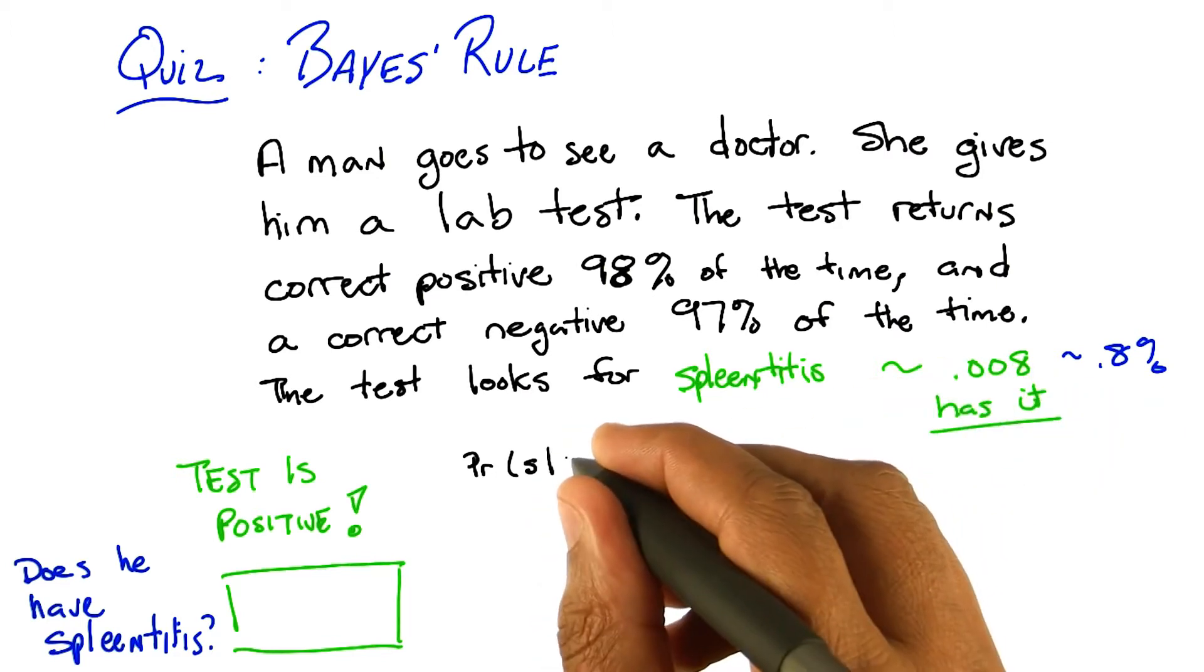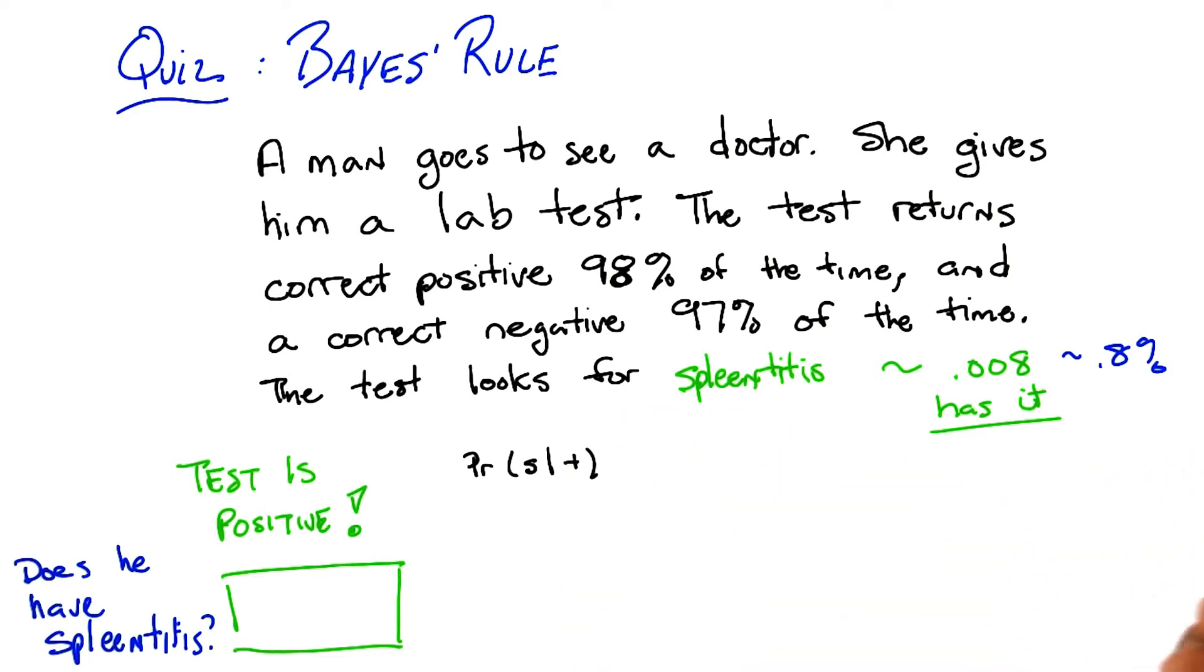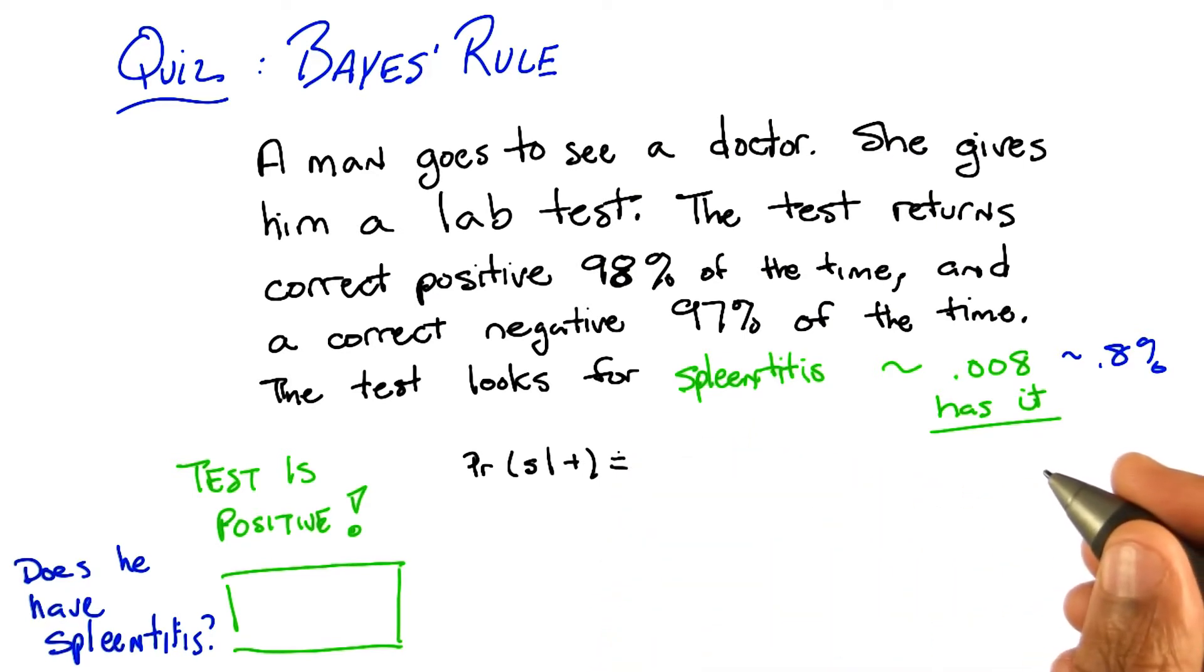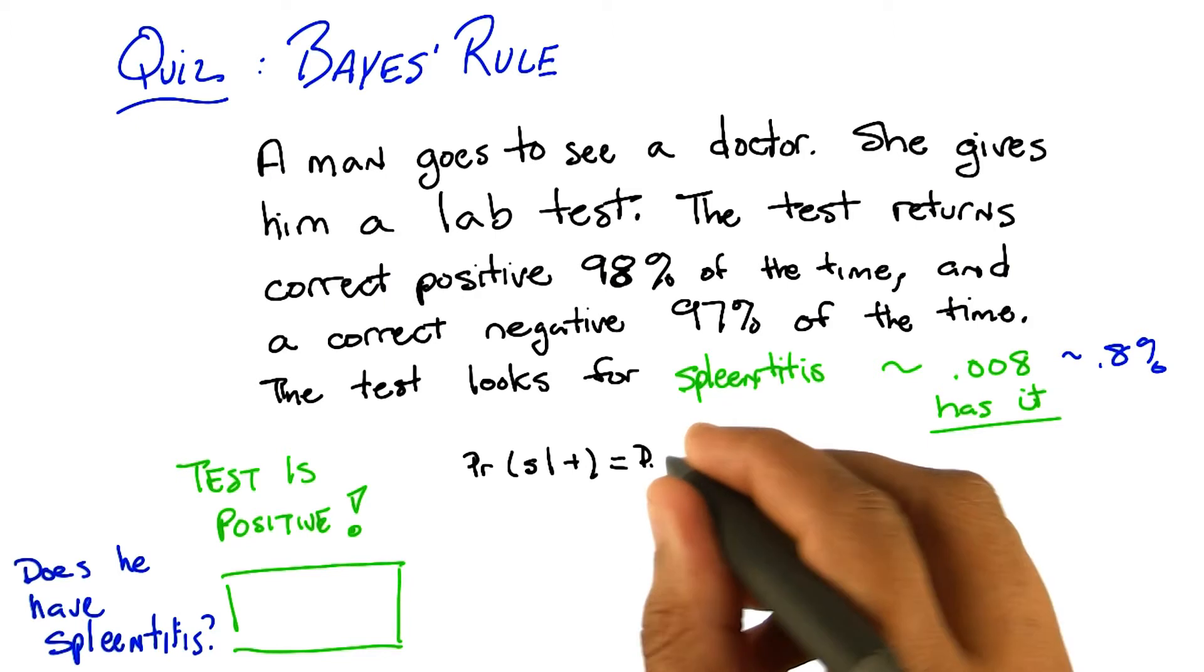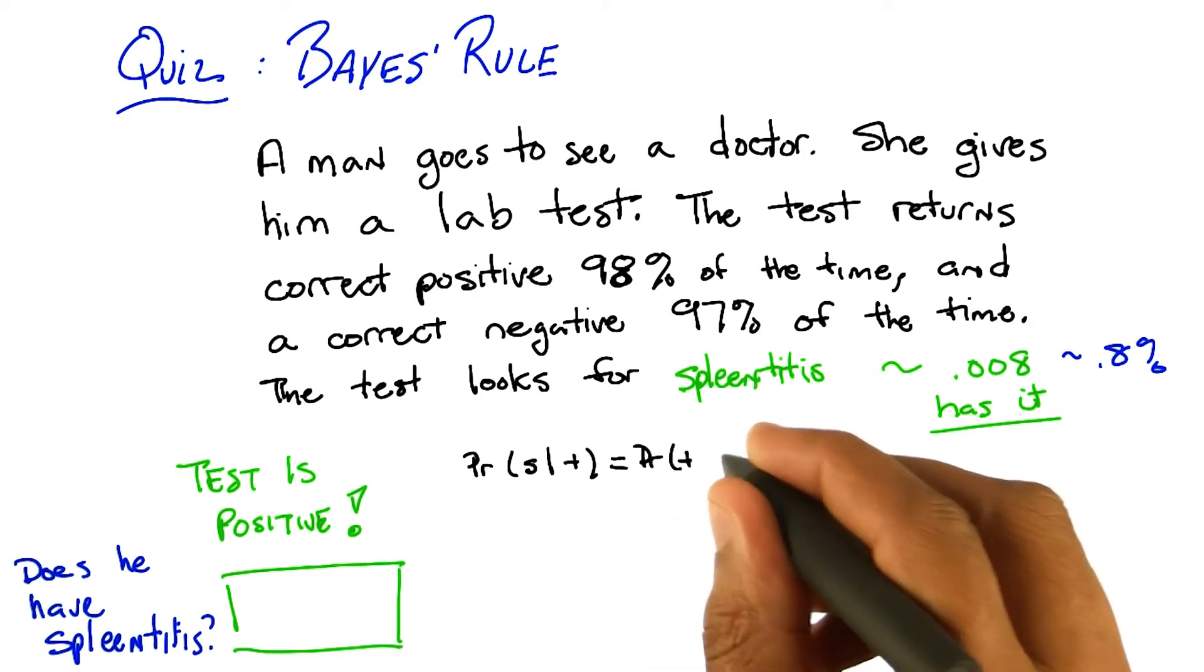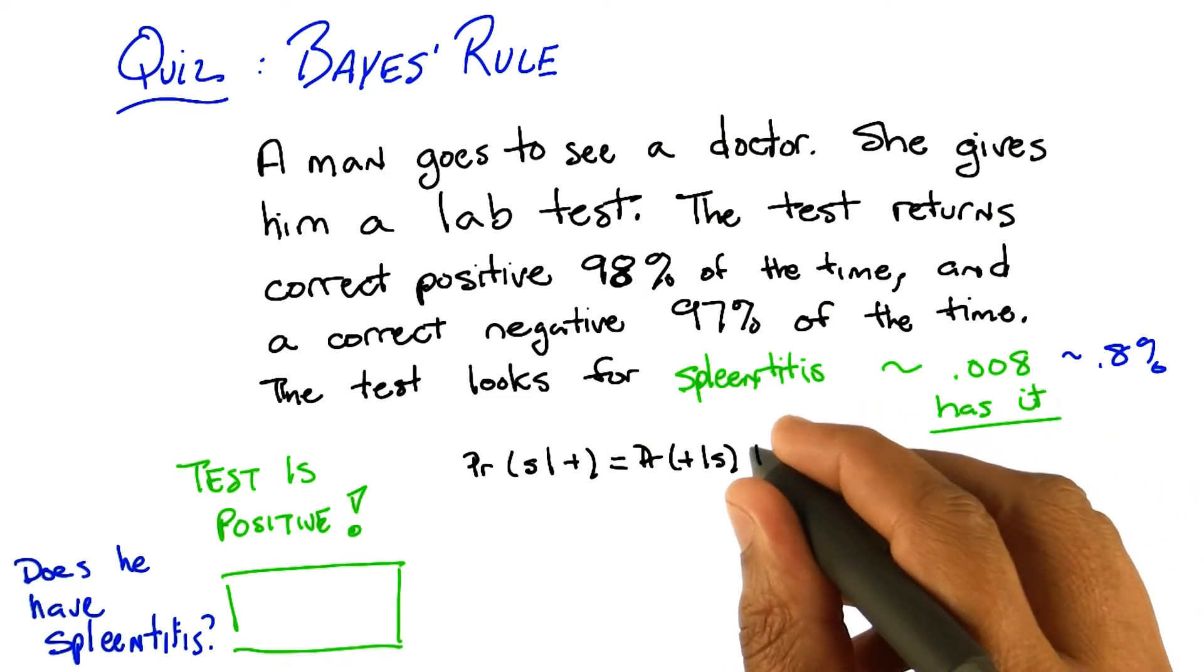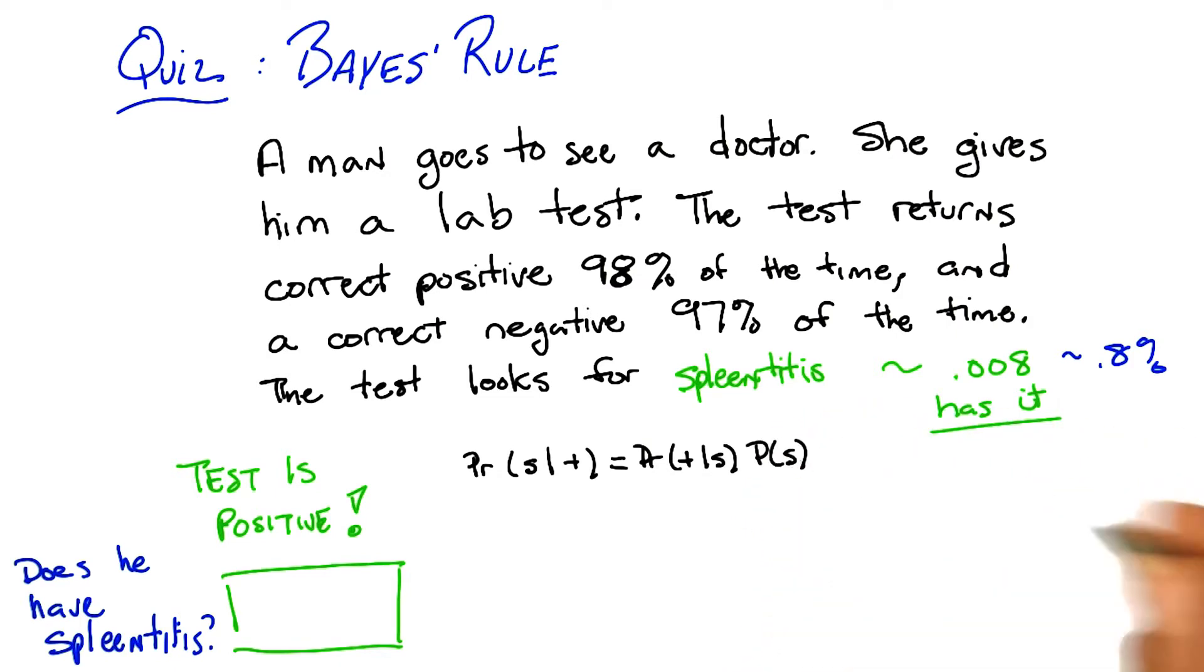Okay. So, the probability of getting splenitis, which again is a very rare thing and probably isn't even real, totally different, it's definitely not real, given that we've gotten a positive result. And you said we should use Bayes' rule, so that would be, in this case, what?